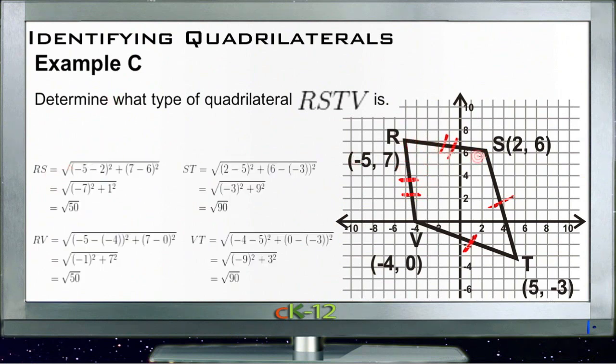RS, so our top side here, using the distance formula, works out to be root 50. And then RV, which is its associated side here, is also root 50, so that works out well. And then ST, down the right-hand side over here, works out to be root 90. And its associated side, VT, also works out to be root 90. So yeah, we do have two pairs of adjacent sides that are congruent, so this is indeed a kite.